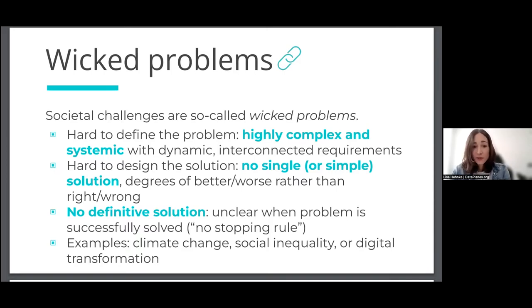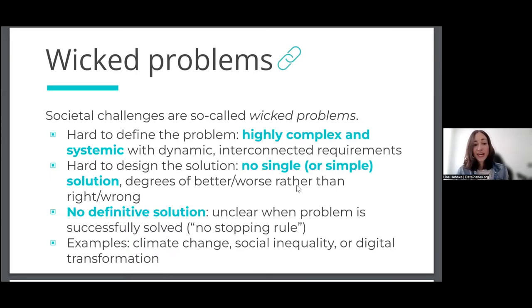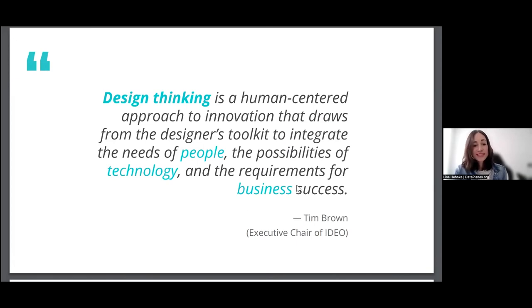With wicked problems, you really have to think in terms of better or worse, not right or wrong, yes or no, true or false. There is also no definitive solution — it's unclear when the problem is actually successfully solved, because there is no stopping rule. When have you successfully solved digital transformation, or social inequality, or the COVID pandemic? I encountered a tweet that said: every problem where there are many stakeholder groups with different interests, where you need alignment and mindset change — these are wicked problems. It really highlights the human dimension.